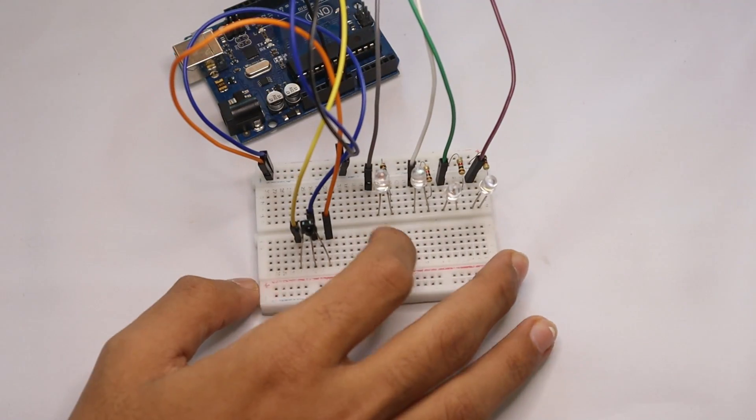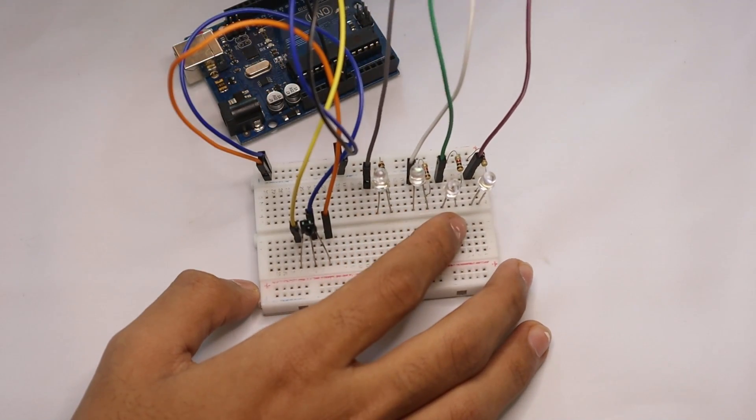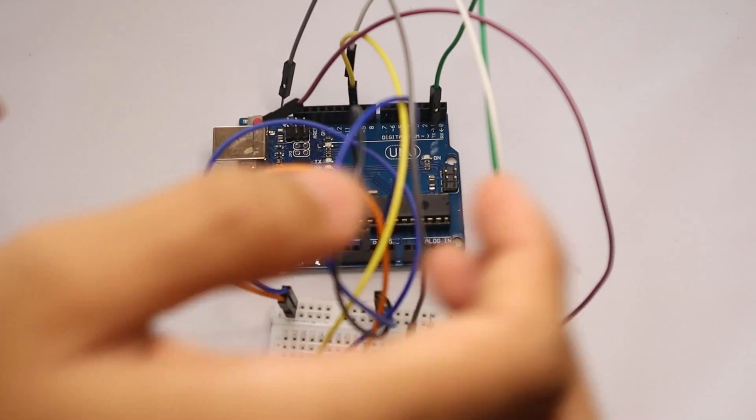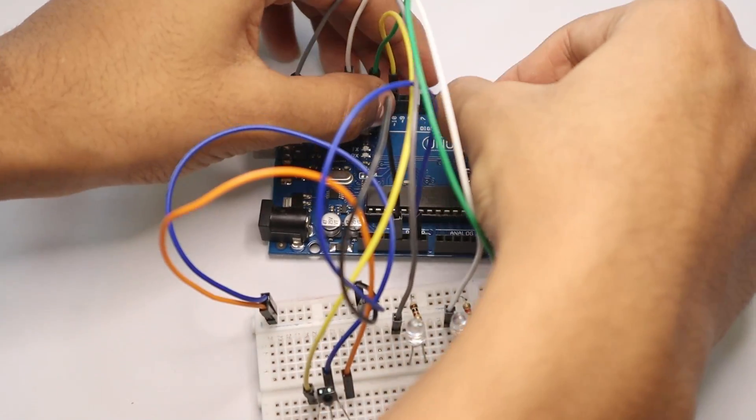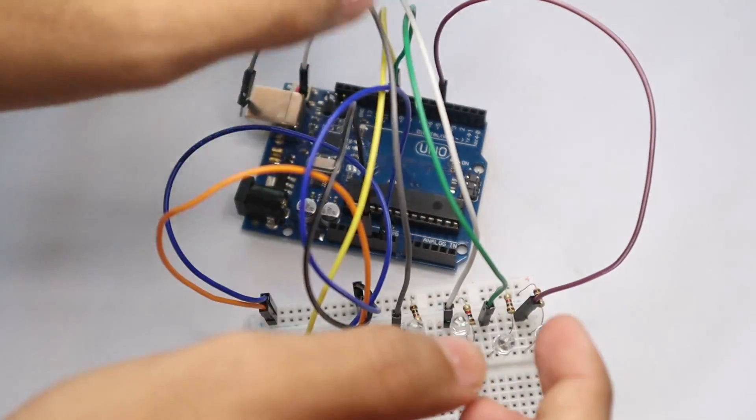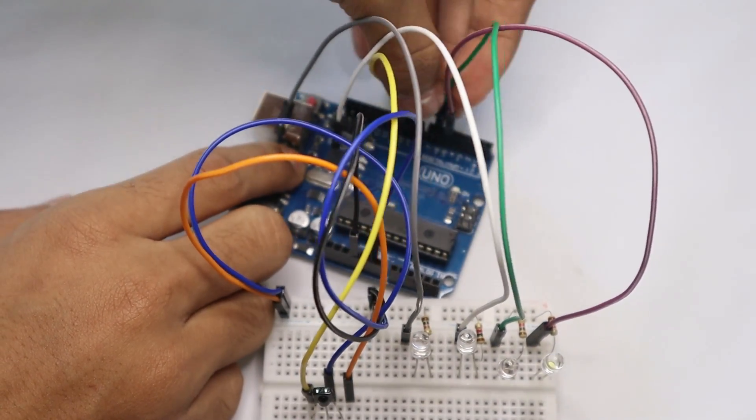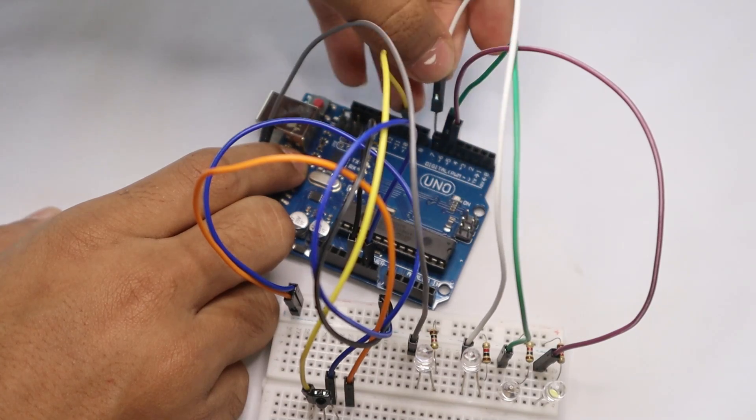Now we have connected the wires for the LEDs. Now let's connect it to the Arduino. So the first LED wire is going to be on pin 5. Now second LED to 6, and the third LED to 7, and the fourth LED to 8.